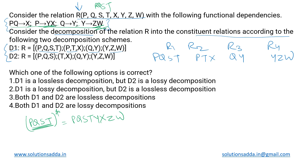Now for the four sub-relations: R1 has PQST as its candidate key. For R2 with attributes PTX, P derives X and Y, so P derives X, but T cannot be derived, so PT collectively forms the candidate key. For R3, a direct FD exists: Q derives Y, so Q is the candidate key. For R4, Y is the key since it can derive Z and W.